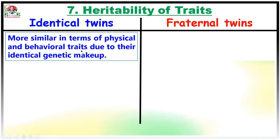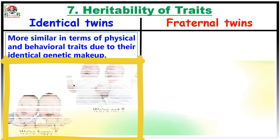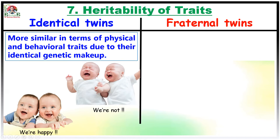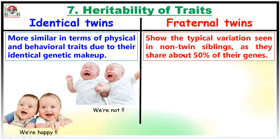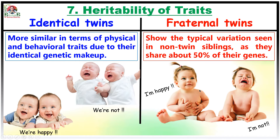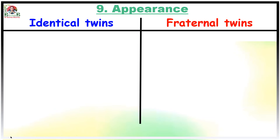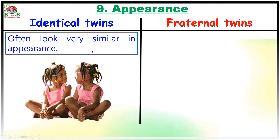Regarding heritability of traits, identical twins are more similar in terms of physical and behavioral traits due to their identical genetic makeup. In contrast, fraternal twins show the typical variation seen in non-twin siblings because they only share about 50% of their genes, so they may or may not be similar in physical and behavioral traits.